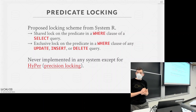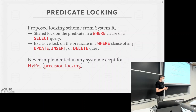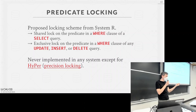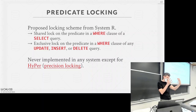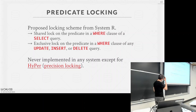Predicate locking is the original locking scheme IBM invented for System R in the 1970s. Instead of taking physical locks on actual tuples, it's a logical lock over a multi-dimensional space covering all possible attribute values. You define a region corresponding to your query's predicate and check whether any other transaction's region intersects with yours in any way.